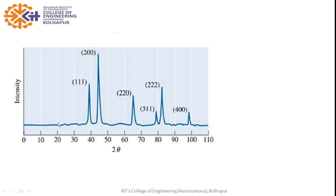We can see here intensity is almost constant and suddenly for a particular angle there is a sharp increase in intensity, or we get a peak. Then again for the next value of theta we get another peak. These peaks show the maximum value of intensity. At these values of theta we get maximum intensity, meaning the condition for brightness is satisfied — that is, Bragg's condition is satisfied.